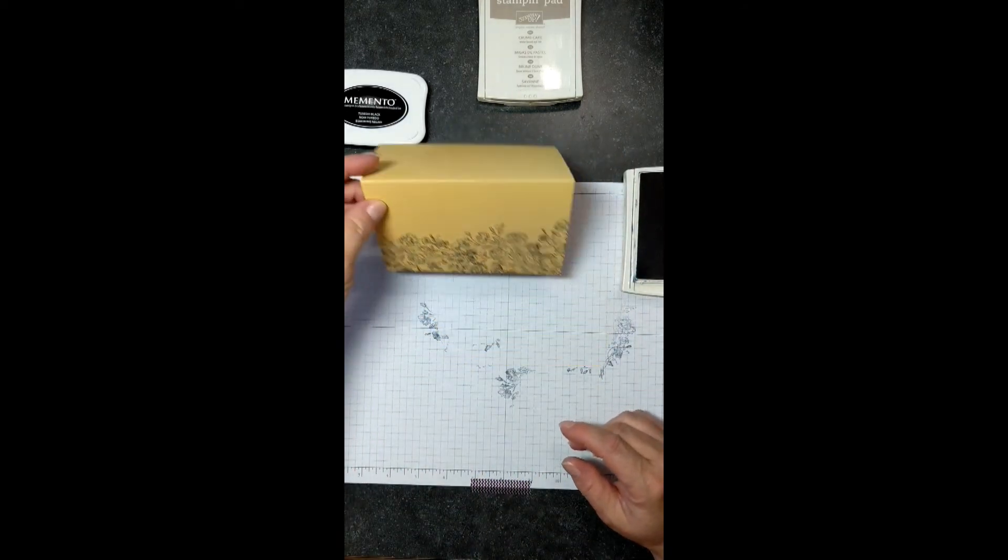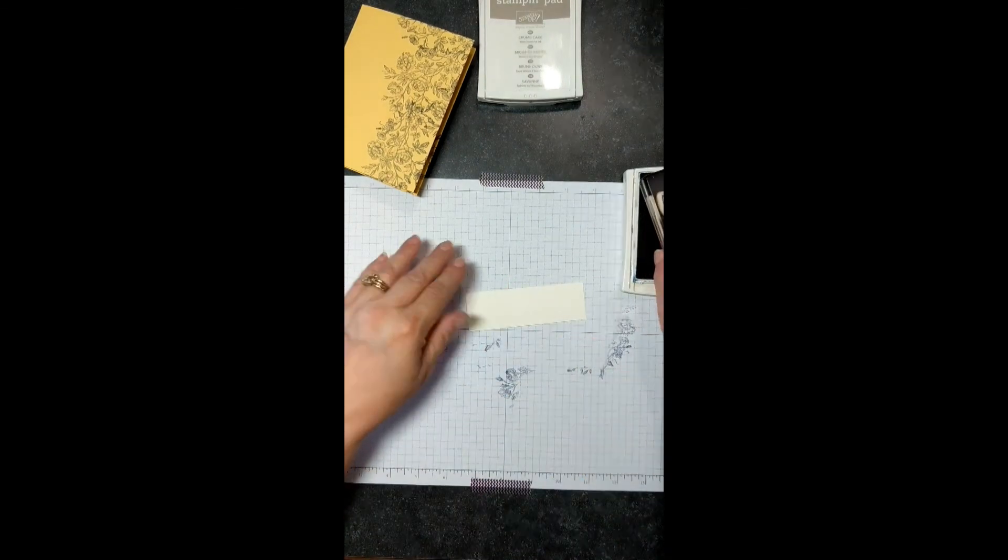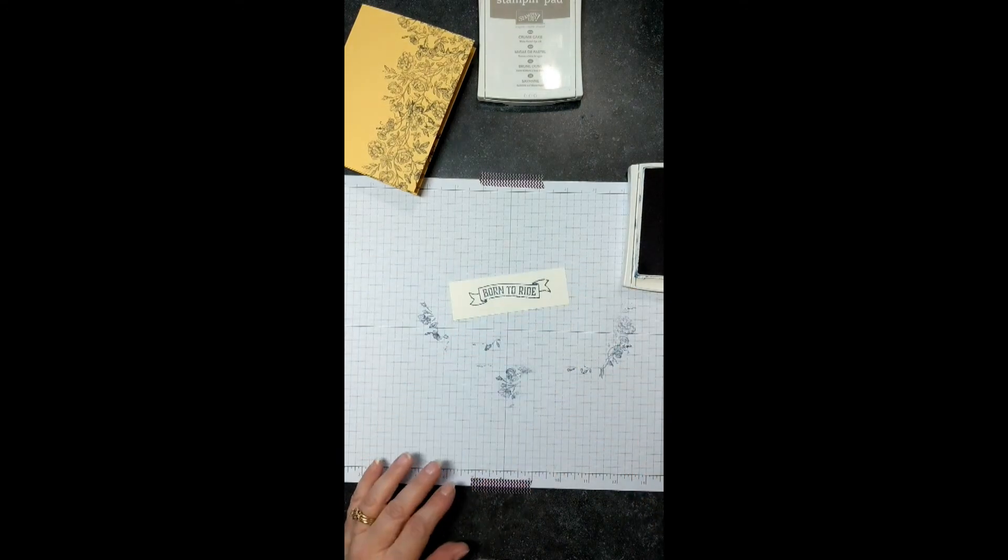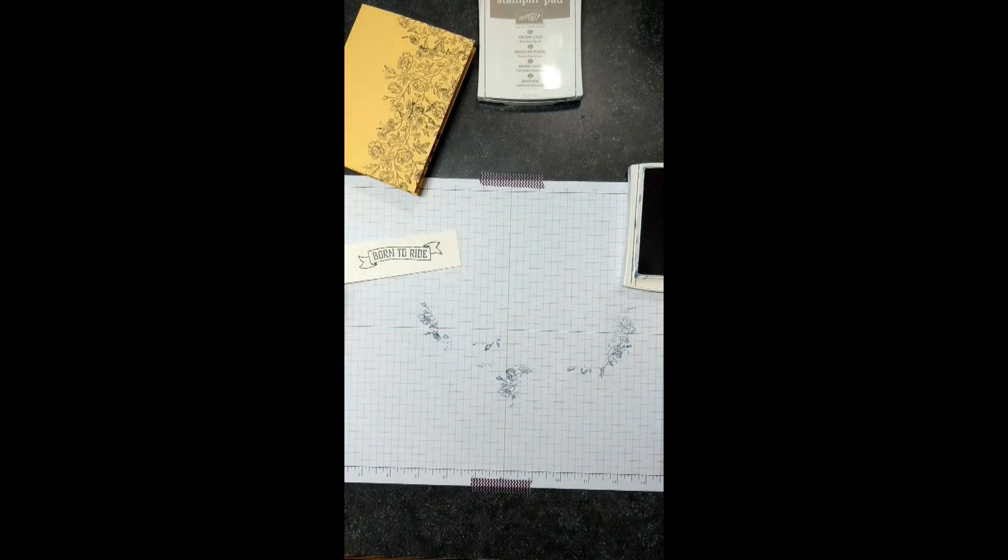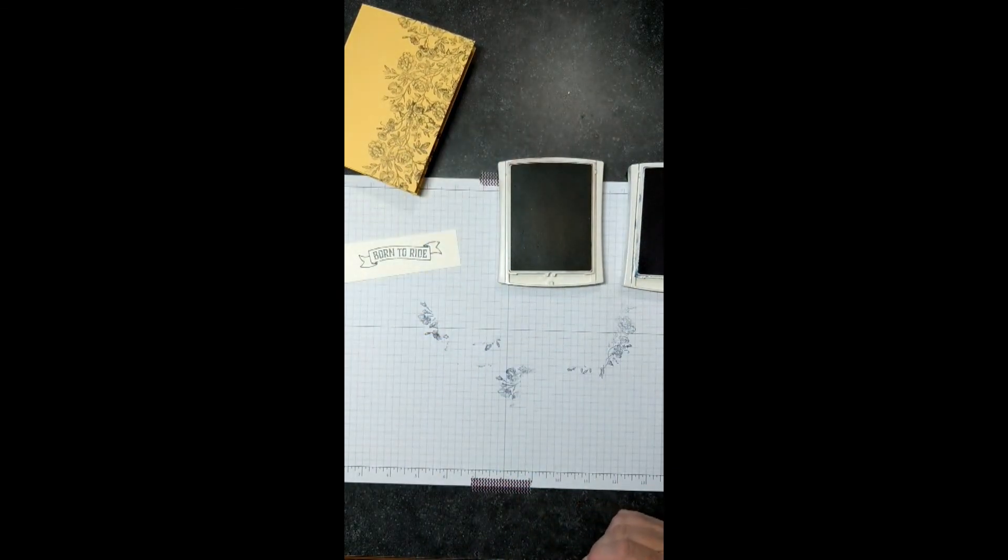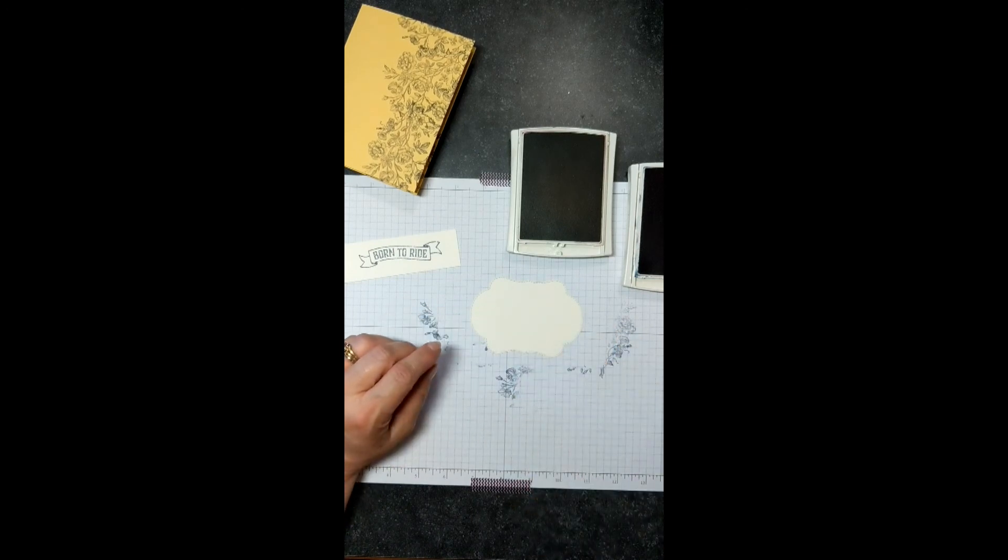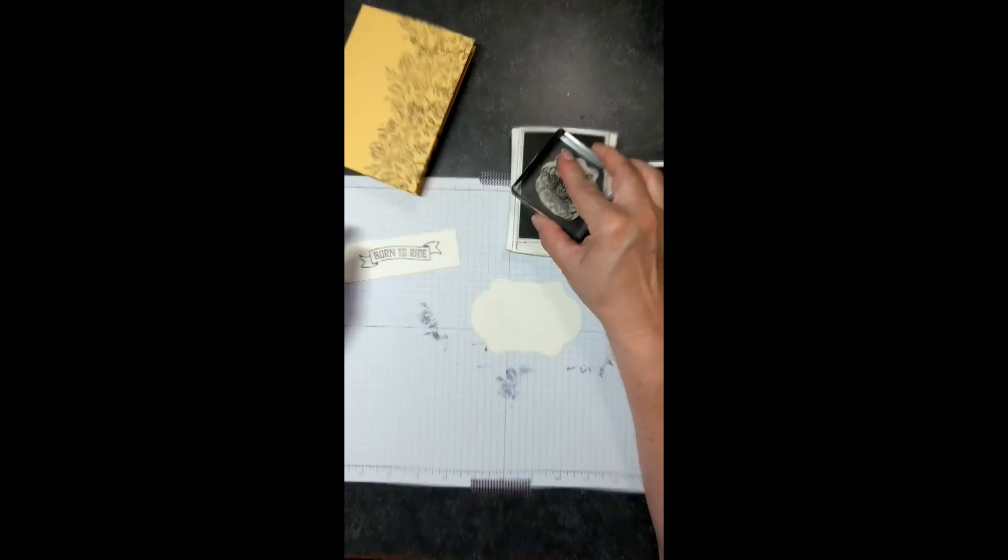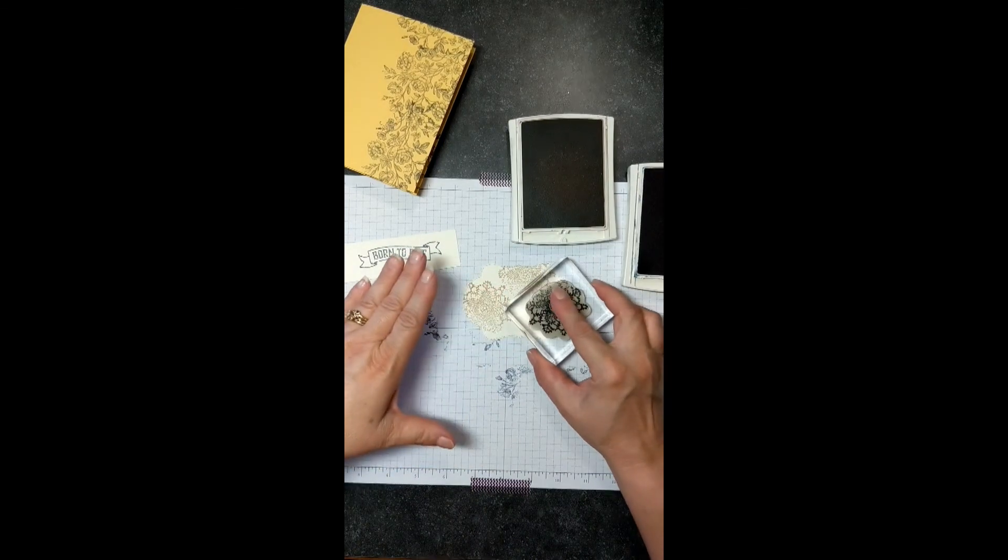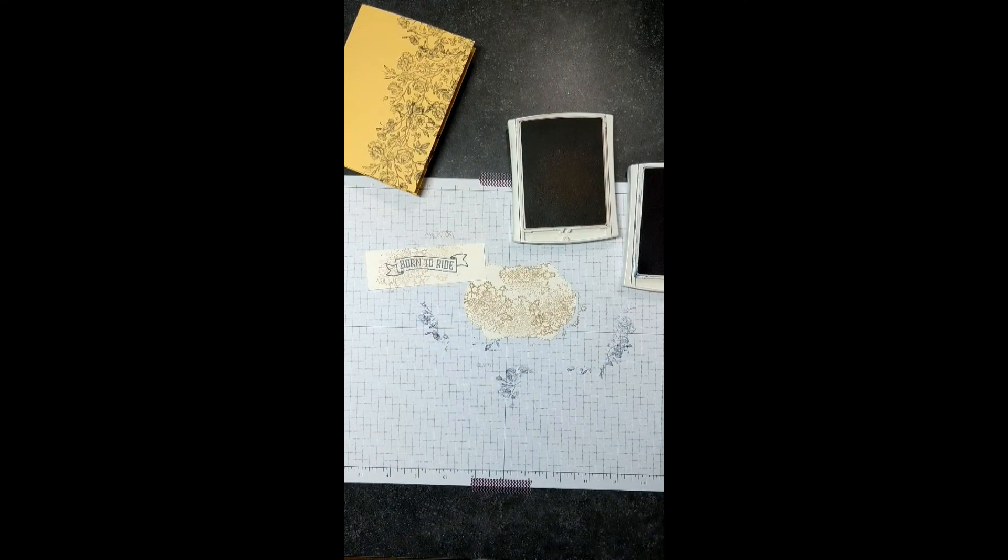And we are done with that stamp. But while we have the navy out, let's go ahead and do our stamping on our Born to Ride. That is also in the Night of Navy. Again, hold it for a moment and let the paper pull the ink off of the stamp. And there we have a nice image. Then let's go ahead and open up our crumb cake. Let's pull our frame here and get our doily. Ink it up really well and just randomly stamp on this piece. While you have it, go ahead and just give a couple on your Born to Ride.